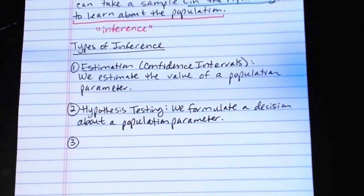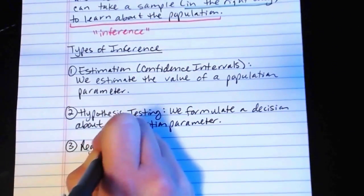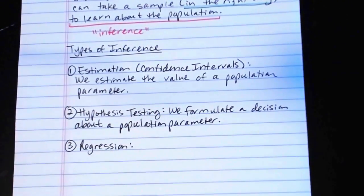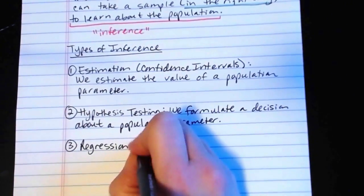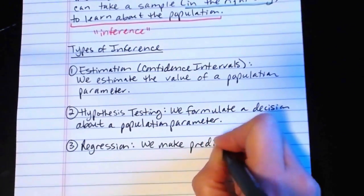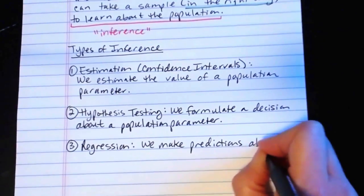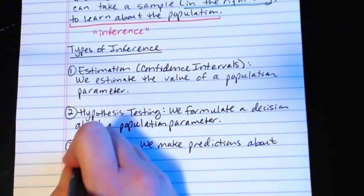And then the last type of inference that we're going to cover in this course is regression. And in regression, we make predictions about the value of a statistical variable.